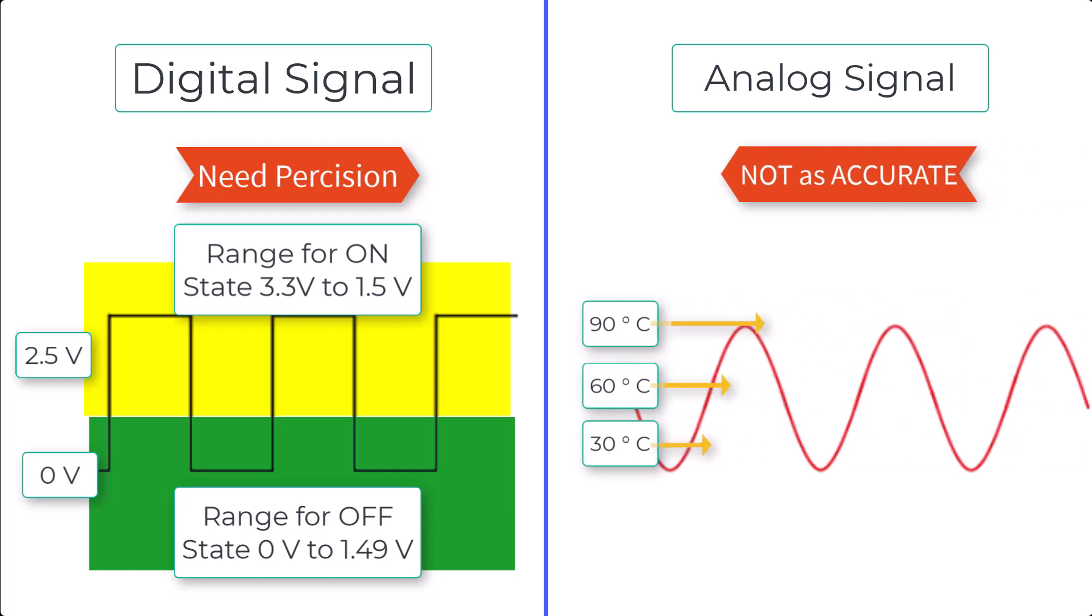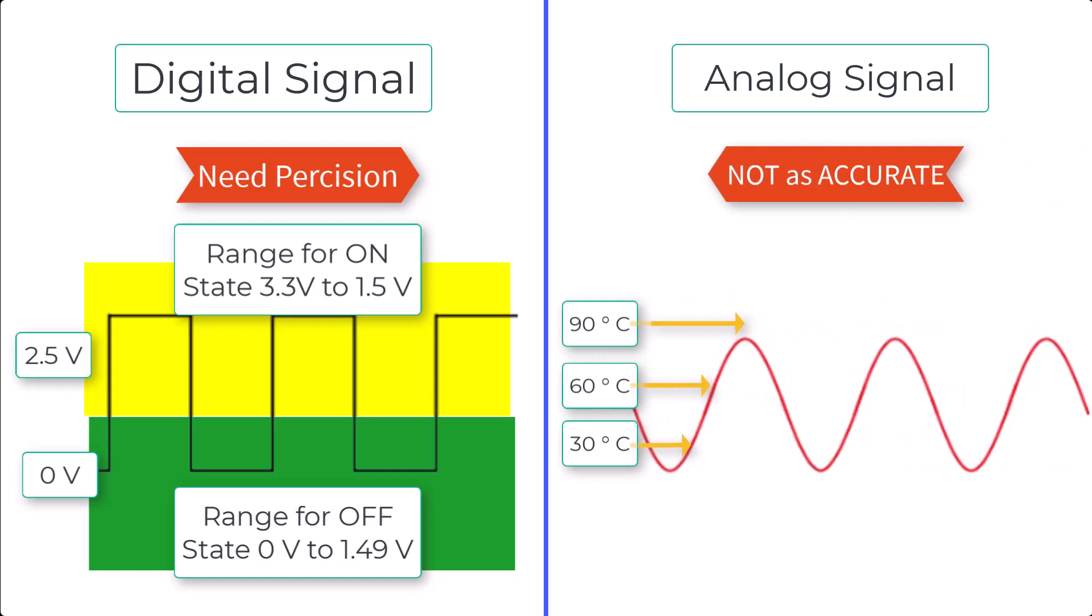In contrast, an analog signal can be more affected by small changes in voltage. If the source voltage fluctuates, the analog signal could be distorted, making it harder to interpret accurately.